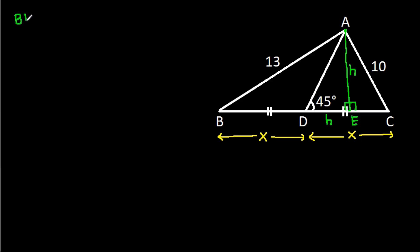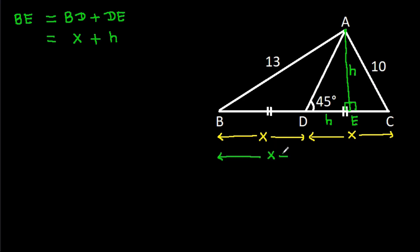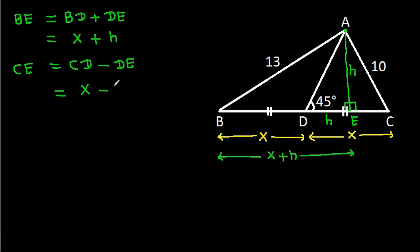Now BE will be equal to BD plus DE, and BD is X plus DE is H. So CE will be CD minus DE, and CD is X minus DE is H. So CE is X minus H.